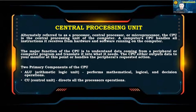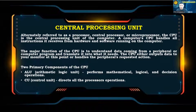Also referred to as a processor, central processor, or microprocessor, the CPU is the central processing unit of the computer. A computer's CPU handles all instructions it receives from hardware and software. The major function of the CPU is to understand data coming from a peripheral or computer program and translate it into what is needed. The CPU either outputs data to your monitor or handles the peripheral's requested action. The two primary components of the CPU are the ALU (arithmetic logic unit), which performs mathematical, logical, and decision operations, and the CU (control unit), which directs all the processor's operations.